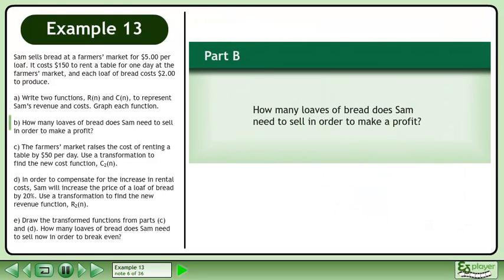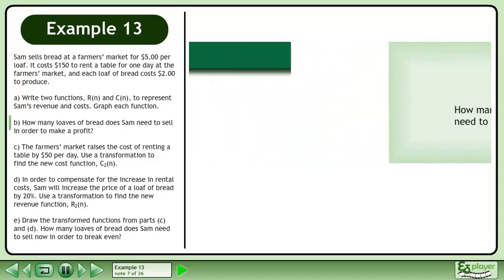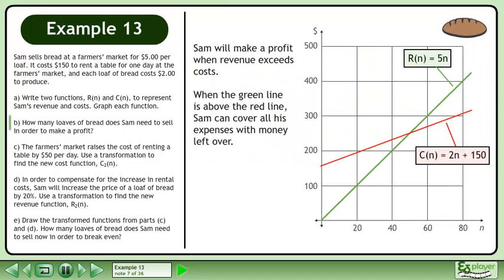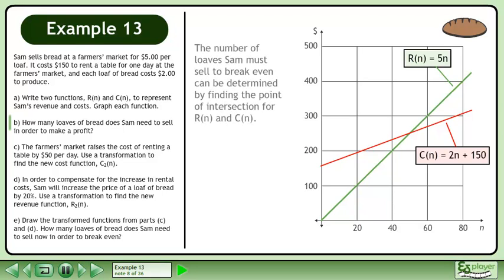In part B, how many loaves of bread does Sam need to sell in order to make a profit? Sam will make a profit when revenue exceeds costs. When the green line is above the red line, Sam can cover all his expenses with money left over. The number of loaves Sam must sell to break even can be determined by finding the point of intersection for R and C of n.